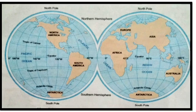You can see the equator line at 0 degrees, and above the equator is the northern hemisphere, while the area below the equator is the southern hemisphere.